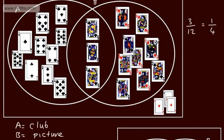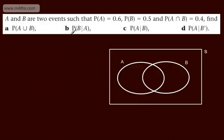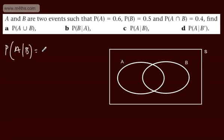Let's look at it in action with an example. A and B are two events such that the probability of A is 0.6, probability of B is 0.5, and the probability of A intersection B is 0.4. We need to find: the probability of A union B, the probability of B given A, the probability of A given B, and the probability of A given not B. The formula is: the probability of A given B equals the probability of A intersection B divided by the probability of B.